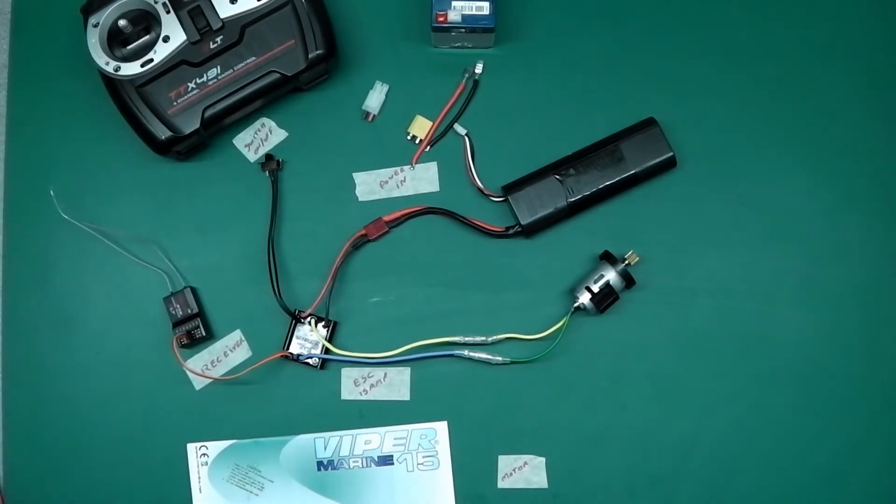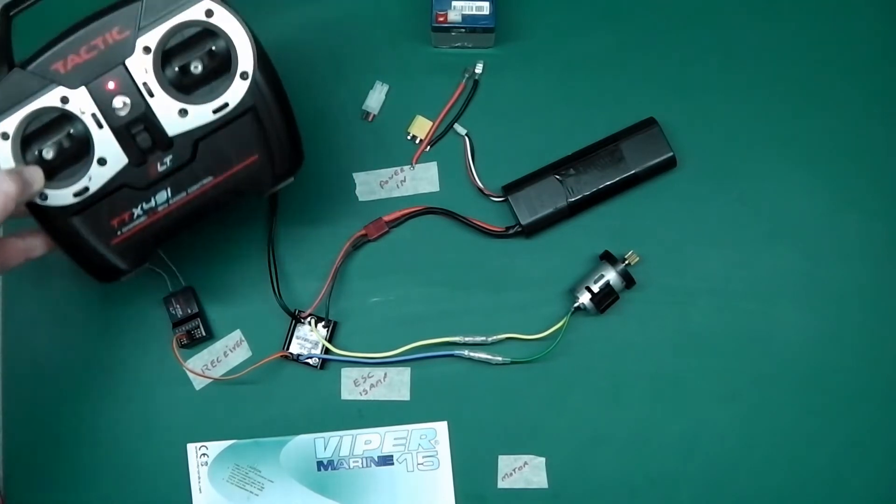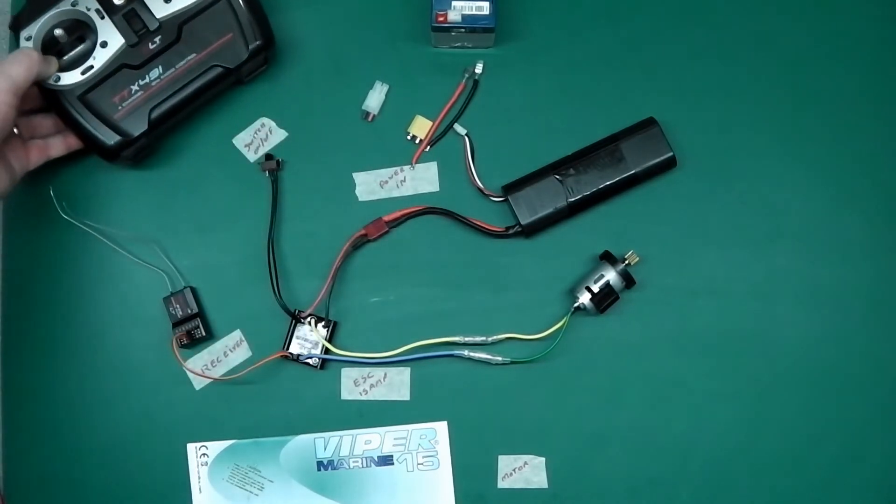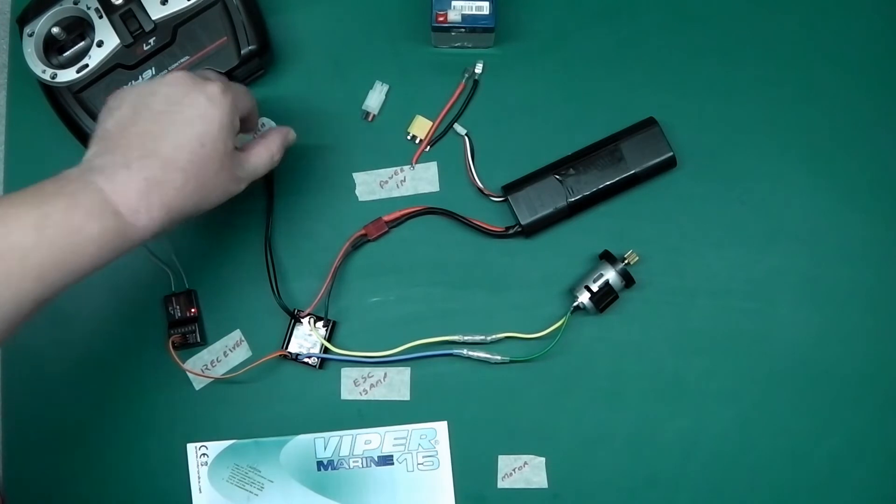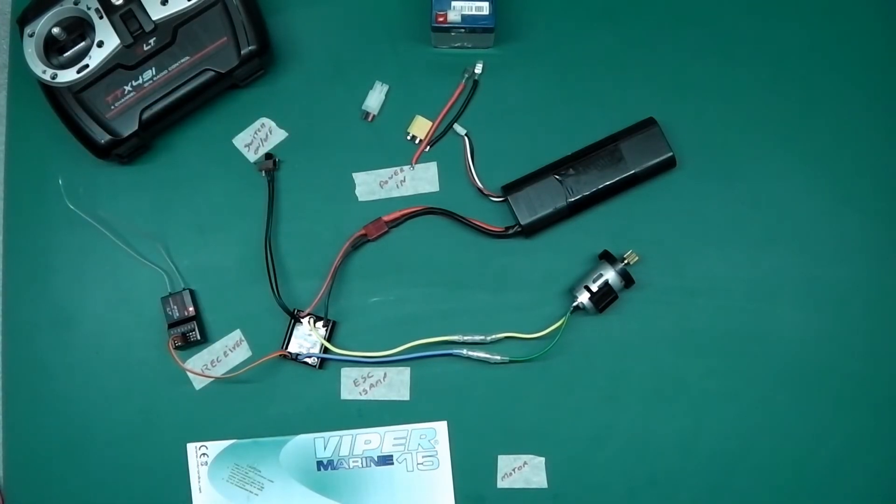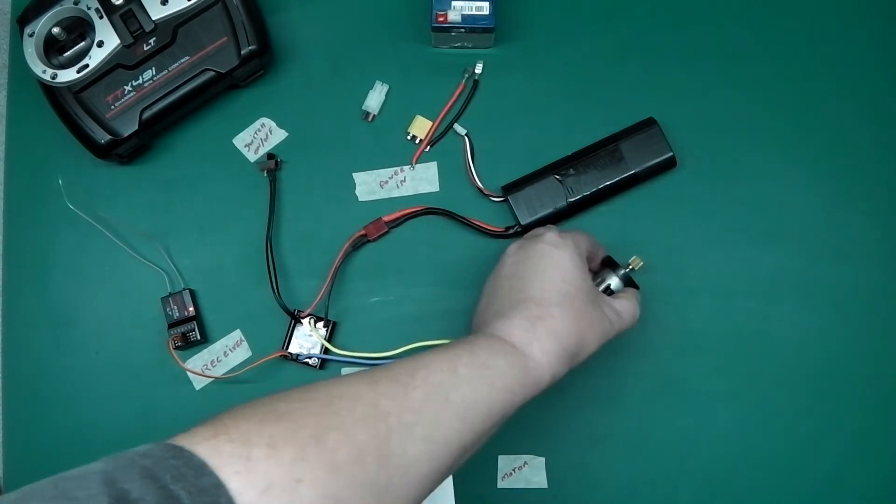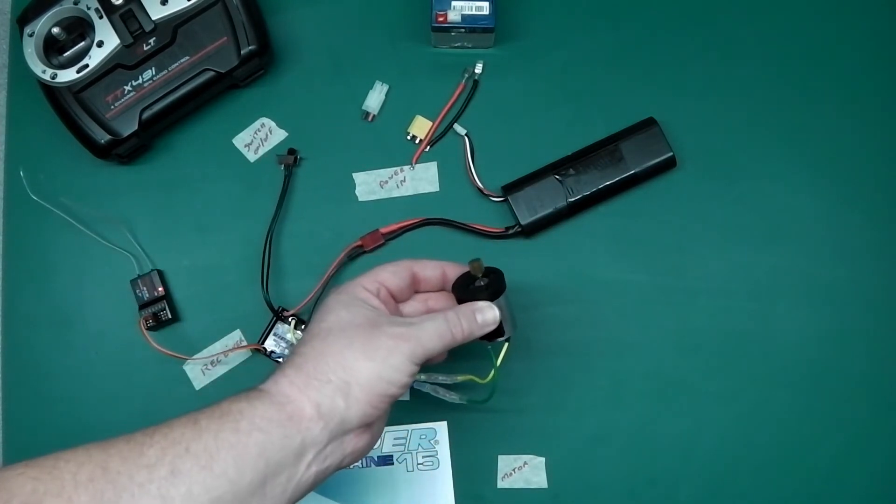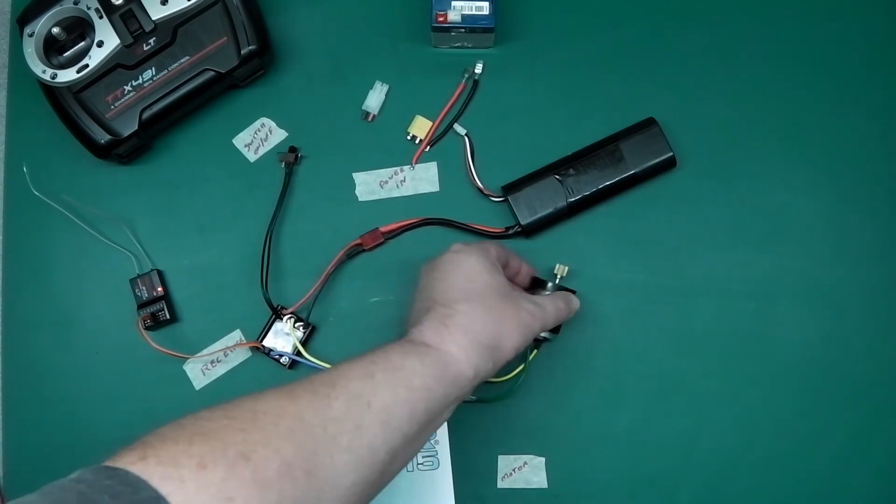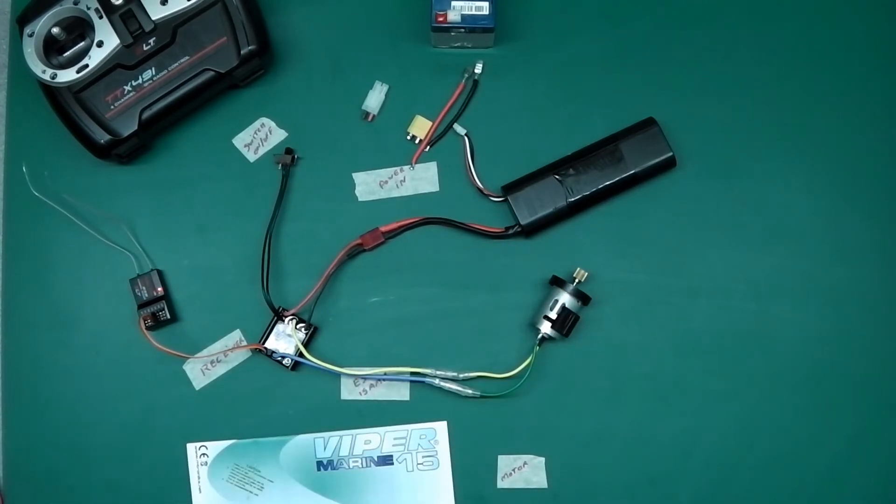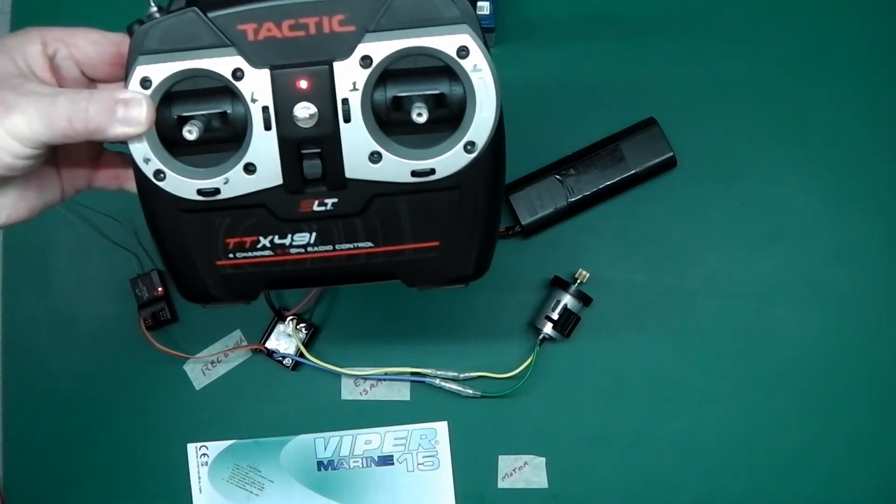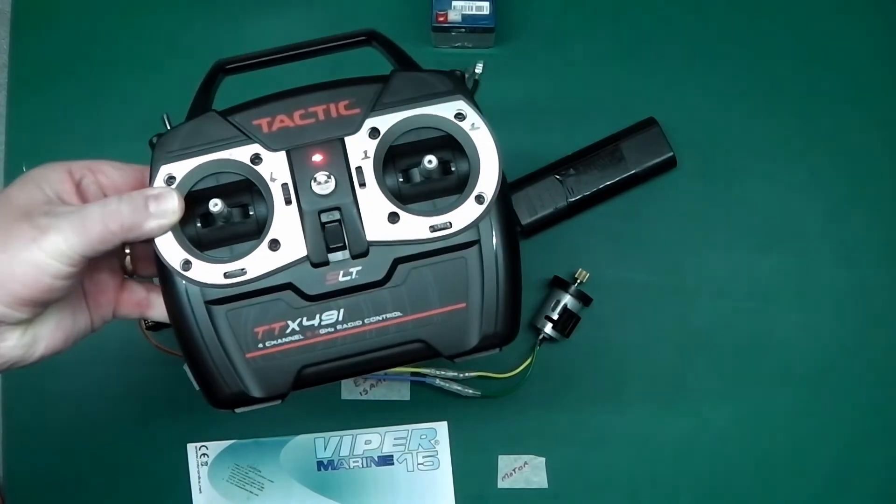So now, switch on the transmitter. We confirm we have power. And we switch on. Right. You'll hear now that the motor is running. See? That motor is running. Because the ESC is not set up. It does not know what your neutral position is in your radio gear.